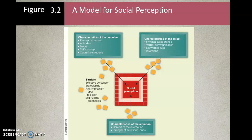There are barriers to social perception. We have selective perception, we stereotype people, we have the first impression error, we have projection, and self-fulfilling prophecies. It would be great if we all had accurate social perception skills, but we don't. The characteristics of the situation also matter — where does it take place? Is it in our home, at work, in the break room? That will also change our perception.